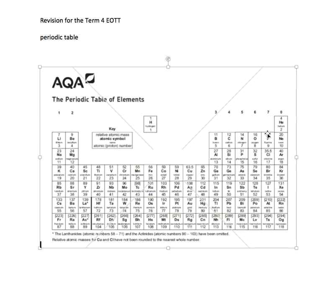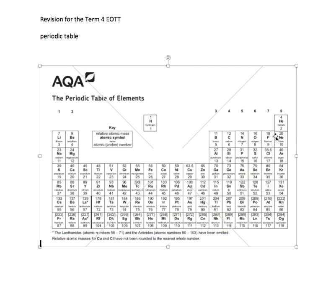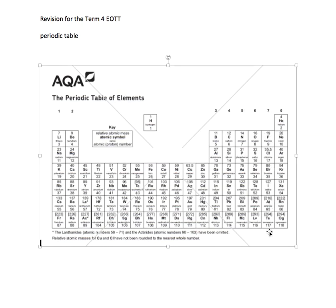In group 7, as you go down the group, you also have more and more shells of electrons getting further and further from the nucleus. But here, what these elements are trying to do is attract an electron into the atom to form a -1 ion. Because the outer shell is getting further from the nucleus, the attraction is less. So the halogens lower in the group are less reactive than those higher up. The reactivity of the halogens decreases as you go down the group. Additionally, the inner electrons shield the outer electrons from the nucleus, which further explains why reactivity increases down group 1 and decreases down group 7.